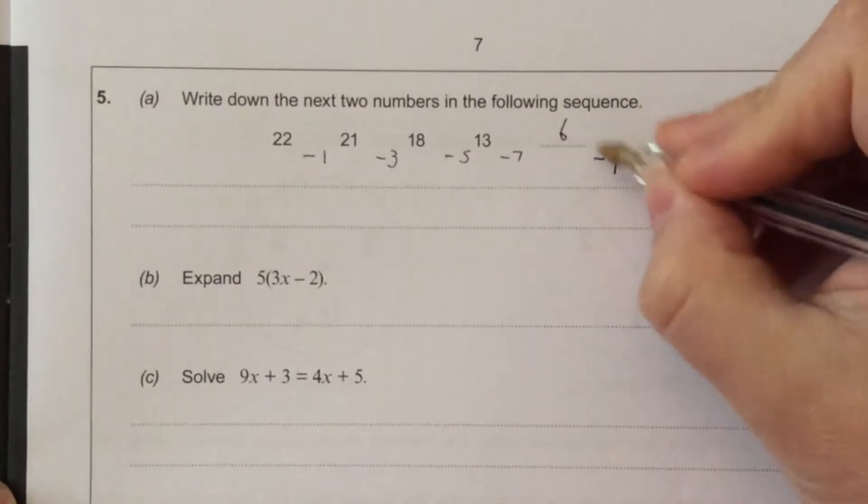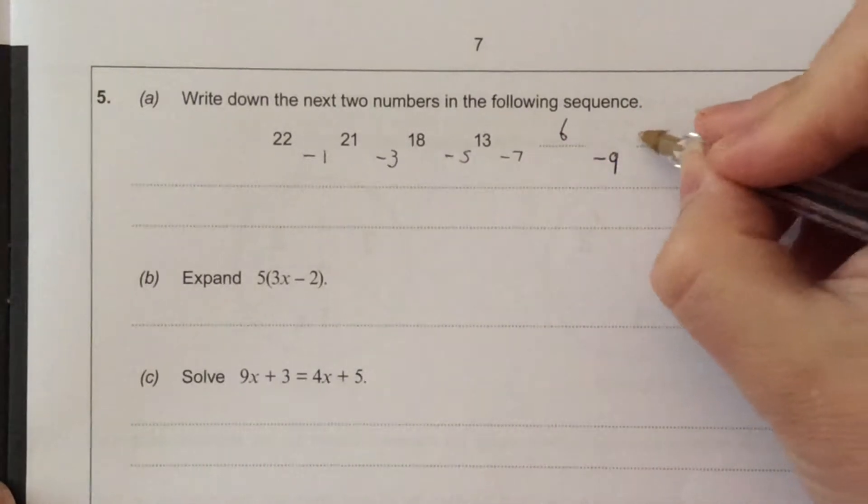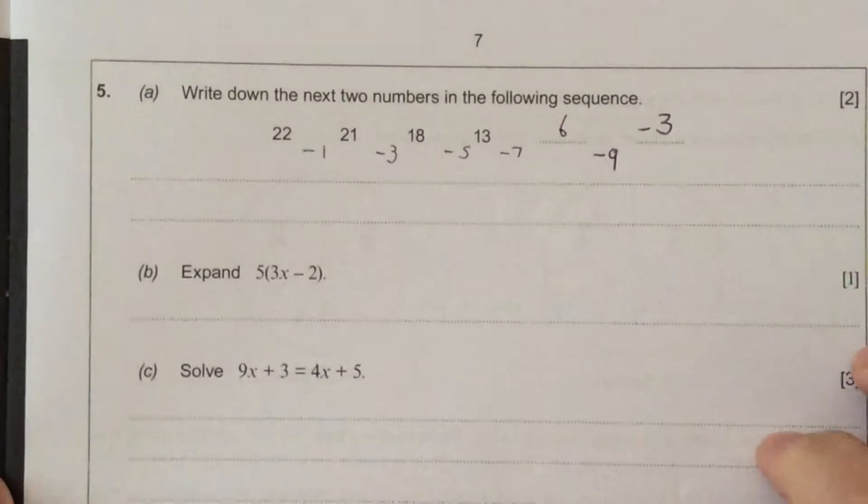And 6 take away 9... 6 take away 6 is 0, there's another 3 to go off, so it's minus 3.